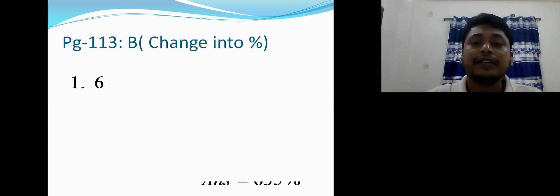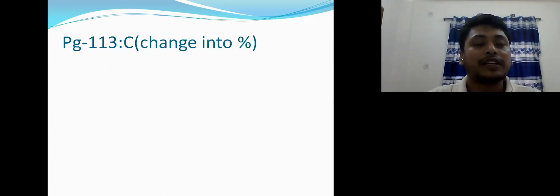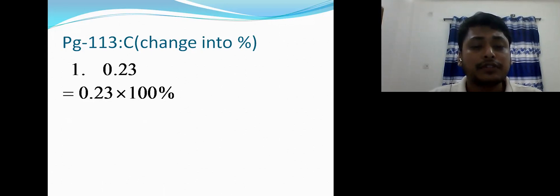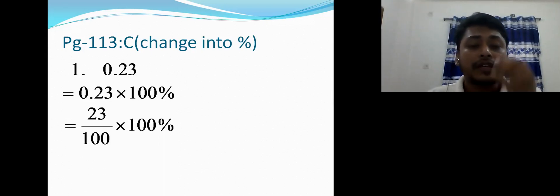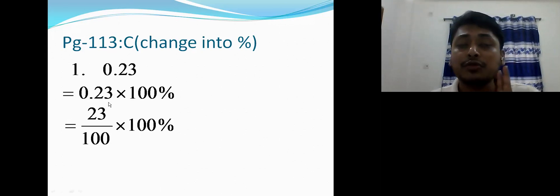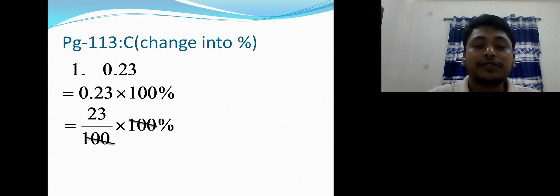Section B: change whole number into percent. Whatever number is given, just multiply by 100 percent — so 600 percent is the answer. Now section C: decimal numbers. For 0.23 percent — first multiply by 100 percent, then change the decimal to a fraction. After the decimal point there are two numbers, so two zeros come in the denominator: 23/100. Cancel 100 and 100 — answer is 23 percent.